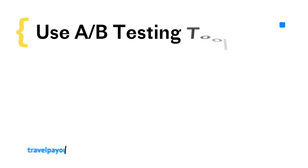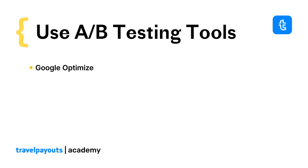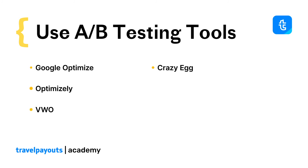Finally, use a powerful A-B testing tool such as Google Optimize, Optimizely, VWO, Crazy Egg, or others.